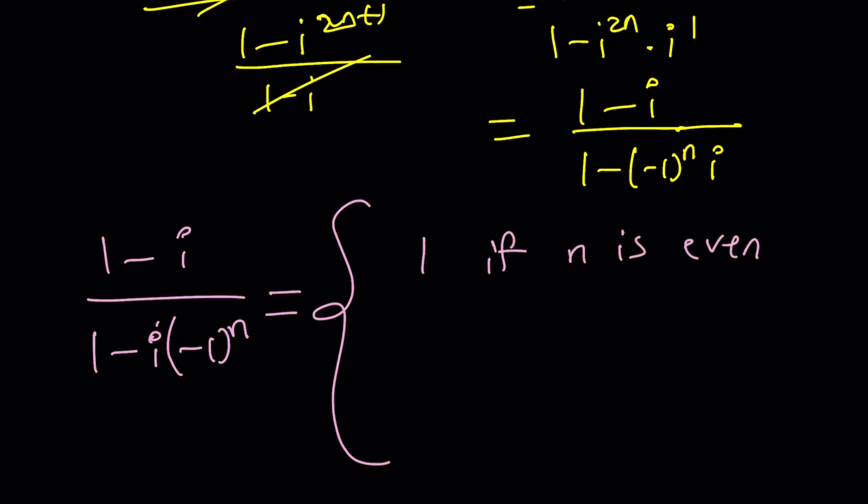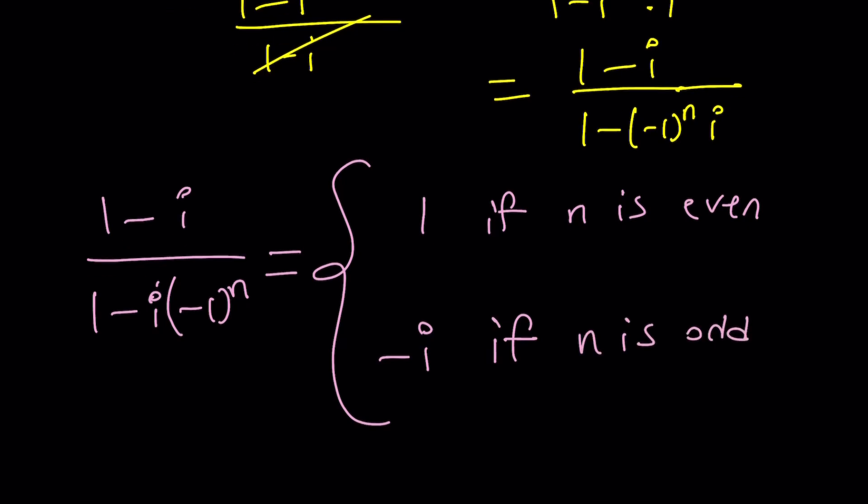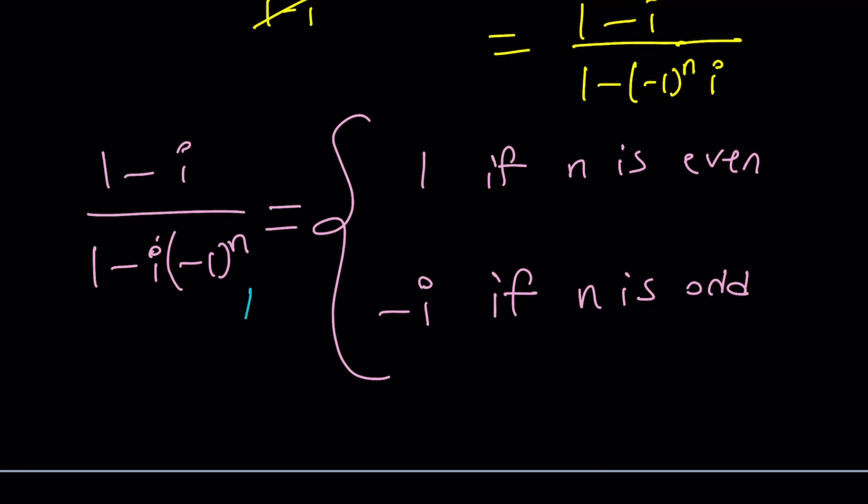And if n is odd, you're going to get negative i as in our case because, remember, n was 7 in our case. And when n is odd, you're going to get negative i all the time. And this brings us to the end of this video.